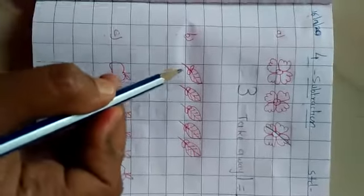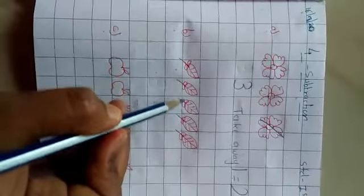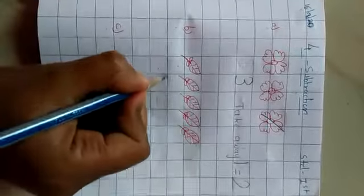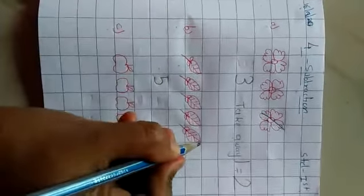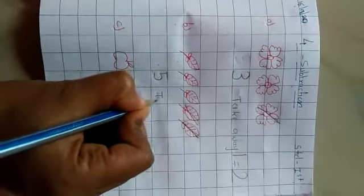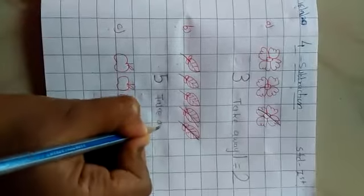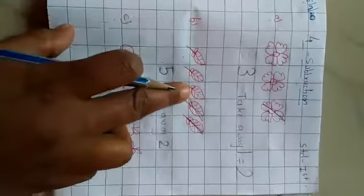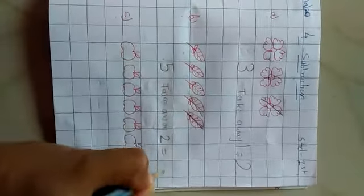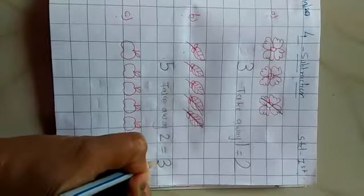Look at one more example. I have some leaves. 1, 2, 3, 4, 5. I have 5 leaves. 2 leaves are falling down. Take away 2. So, how many left? 1, 2, 3.